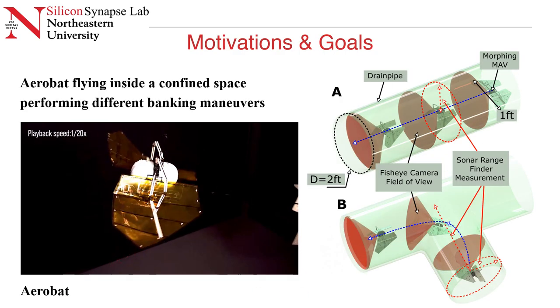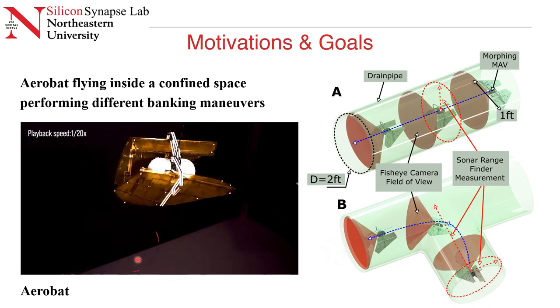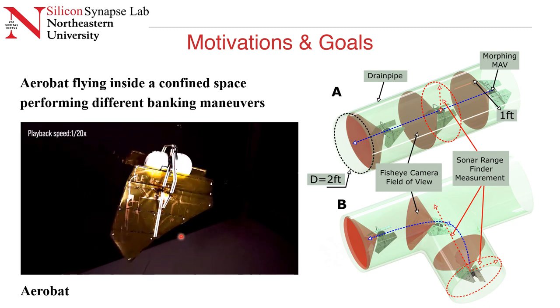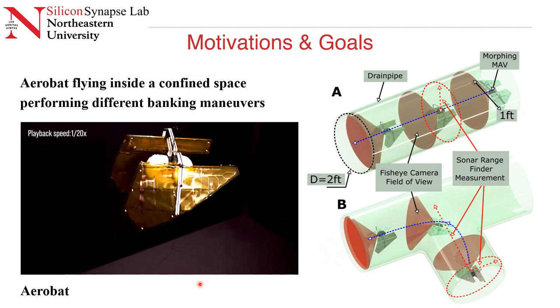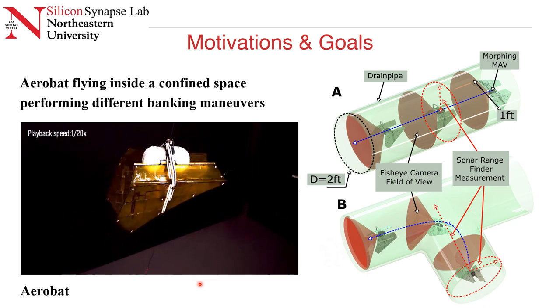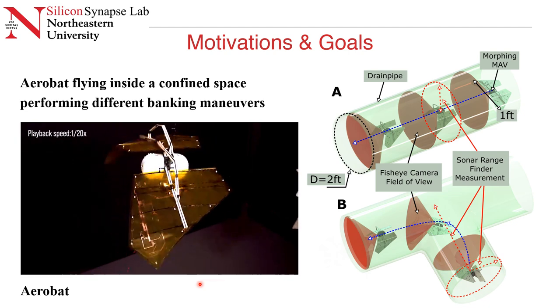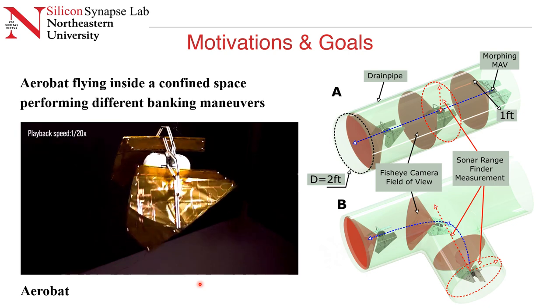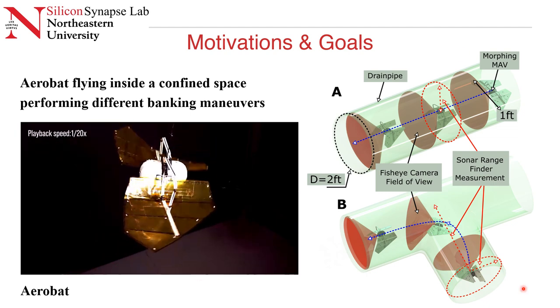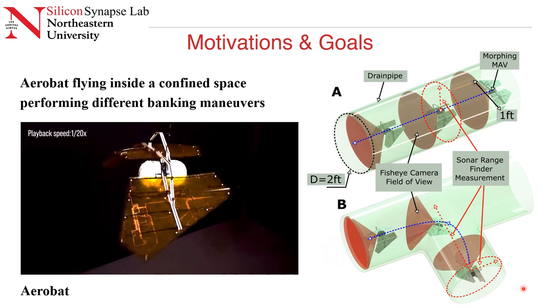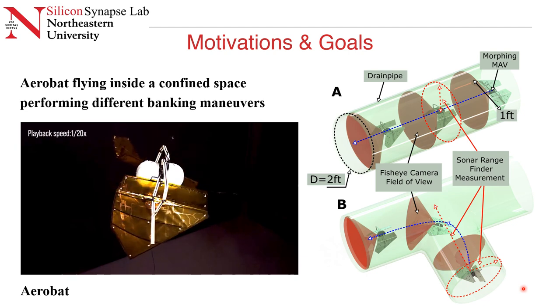Moving on to motivation and goals for this paper, I want to first introduce our tail-less flapping wing robot, which is called Northeastern Aerobat. This robot is interestingly designed such that it is capable of doing dynamic morphing wing flight. It can expand and collapse its wing dynamically, and also it can produce a lift force of 40 gram force.